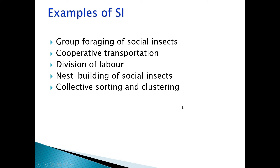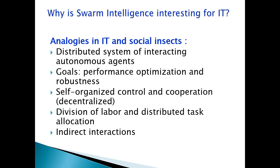Some examples of SI: group foraging of social insects, cooperative transportation, division of labor, nest building of social insects, collective sorting and clustering. Next, why is swarm intelligence interesting for IT? There are some analogies between information technology and the social behavior of social insects.